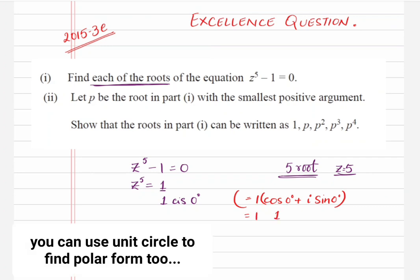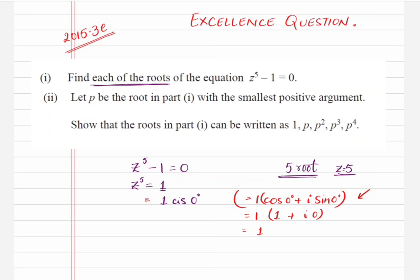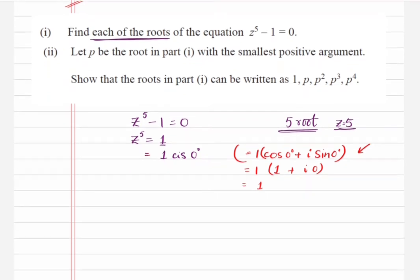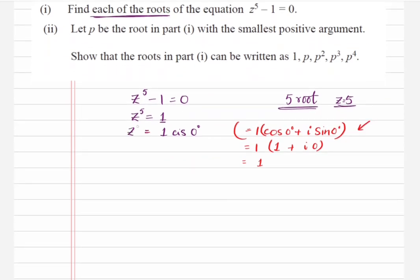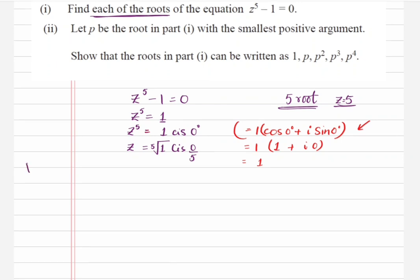So 1 cis 0° gives us 1×1 + i×0 = 1. That's how we convert 1 to polar form — when the real number is 1 with no imaginary part. Now that we have z⁵ = 1 cis 0, we can write z equals the fifth root of 1 cis (0/5), using De Moivre's theorem.